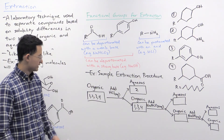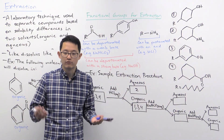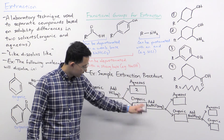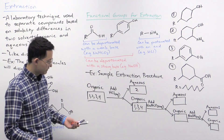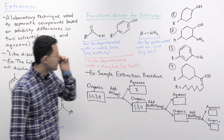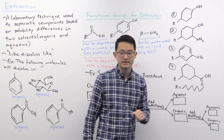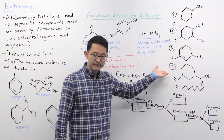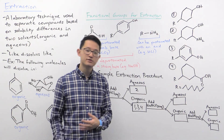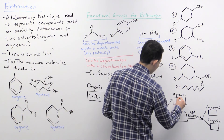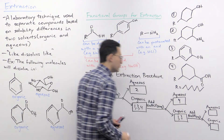We separate the layers — since they're immiscible you can just pour away one layer. The organic layer still has molecules 1, 3, and 4, so we add sodium bicarbonate, a weak base that can deprotonate carboxylic acids. Molecule four has a carboxylic acid, which gets deprotonated to gain a full negative charge. With a full negative charge it can no longer dissolve in the organic layer and must move into the aqueous layer. Molecules 1 and 3 are unaffected and stay in the organic layer.